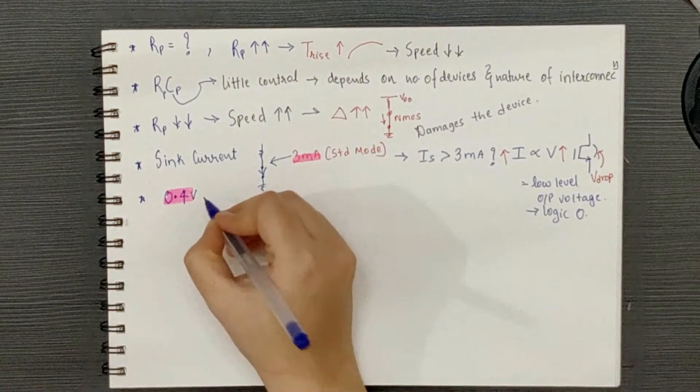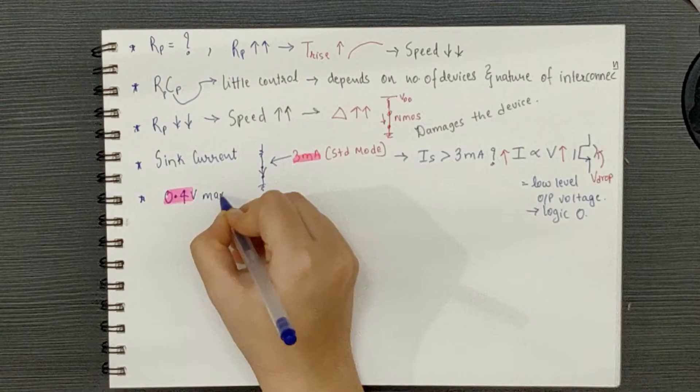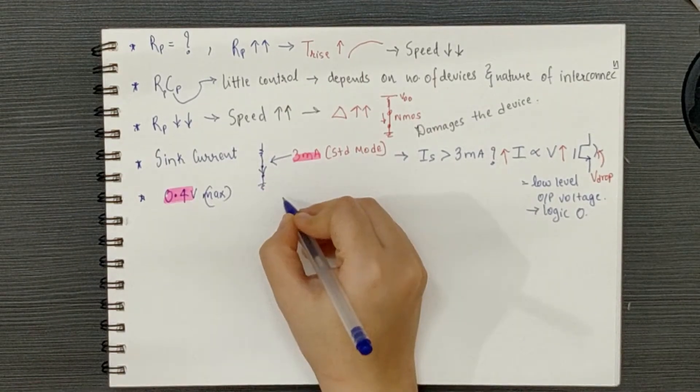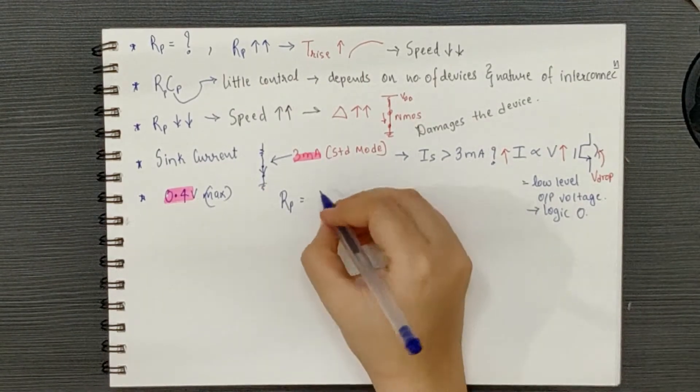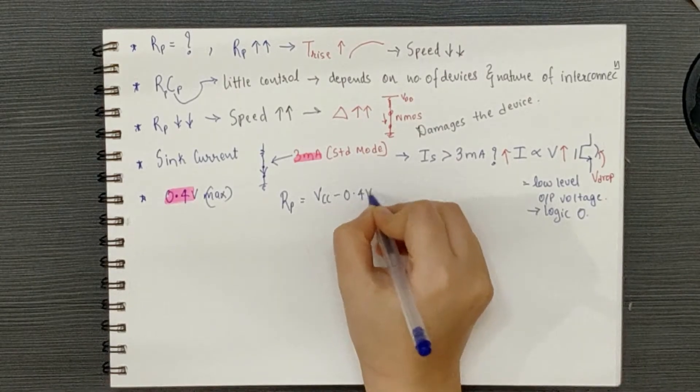And you can see the trace of the voltage on your oscilloscope. So, let's calculate the minimum value of RP or the pull-up resistor by considering these worst case values of 3mA and 0.4 volts.